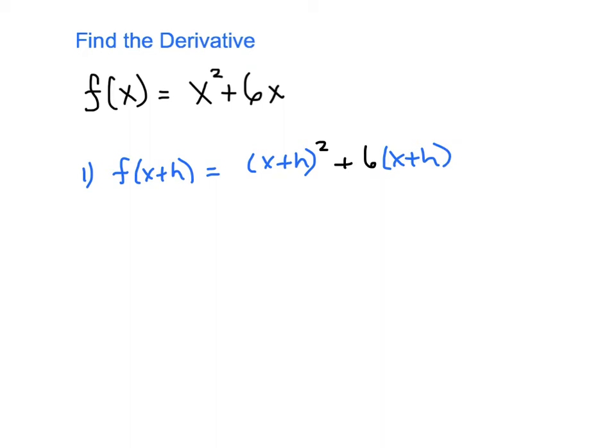And simplifying that, we'll get x squared plus 2xh plus h squared. That's what you get when you expand the binomial there, the square of the binomial. We'll distribute the 6 and we'll get 6x plus 6h.